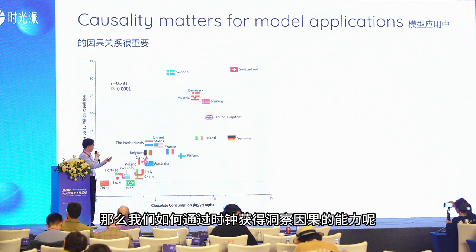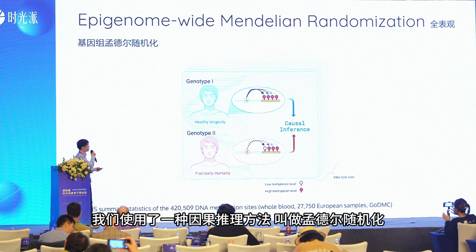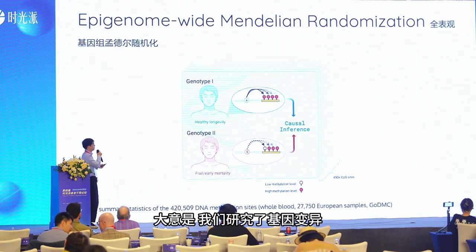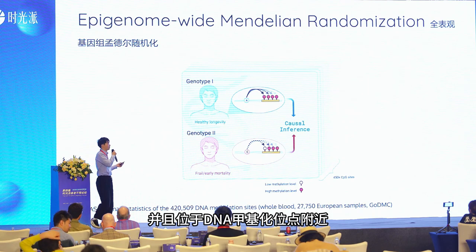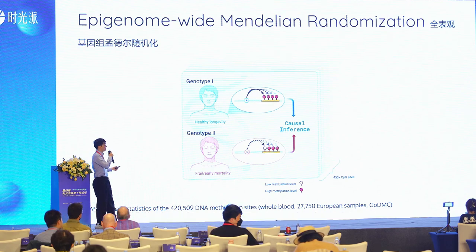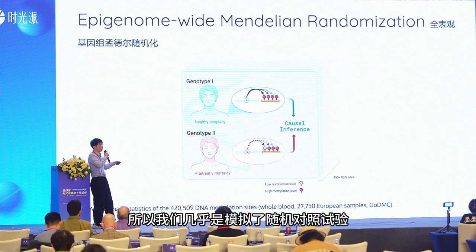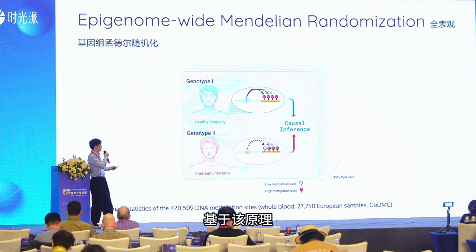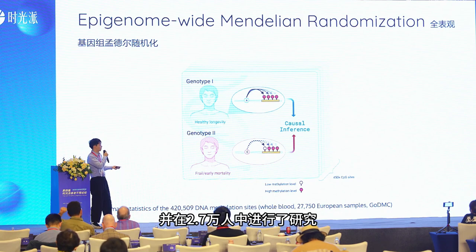So how do we derive causal insight from the clock? We use a causal inference approach called Mendelian randomization. We take the genetic variant that has strong association with the DNA methylation level and is also located near the DNA methylation site. We use it as an instrument to study how genetic mutations can affect healthy longevity. Since genetic variants are allocated randomly when passed from parent to offspring, this mimics a randomized controlled trial. We performed this causal inference for more than 400,000 DNA methylation sites across the genome in a cohort of 27,000 people.